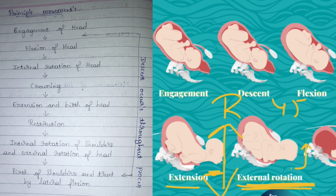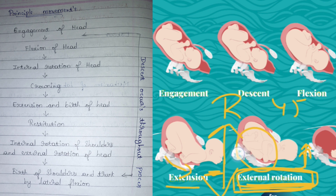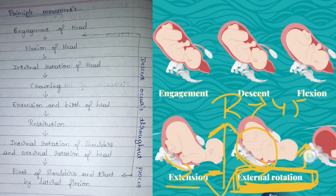External rotation is different from restitution: with restitution, only the head rotates 45 degrees, whereas with external rotation, the head rotates and the body also starts to rotate. You can see the change in the hand and leg positions. External rotation involves the external rotation of the head and internal rotation of the shoulder — the head rotates and the body rotates with it.